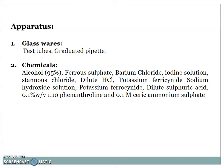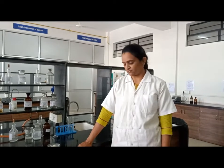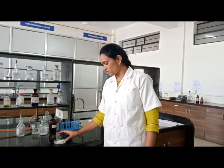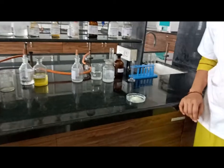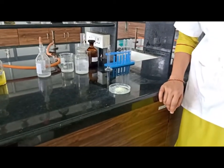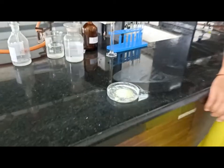For the actual practical, we move towards the laboratory. Today we are going to deal with identification tests on a given sample of ferrous sulfate. This is our sample, which is bluish-green in color, a crystalline powder, and almost odorless.